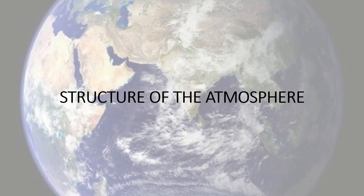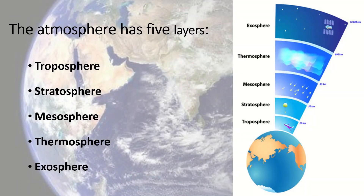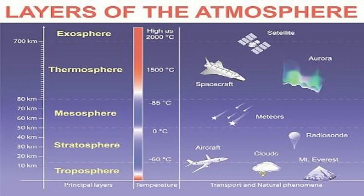Now let's move on to the structure of the atmosphere. The atmosphere has five layers. Starting from the surface of the earth, we begin with the troposphere, then the stratosphere, mesosphere, thermosphere, and the outermost layer, the exosphere. Here you have a chart showing the height in kilometers, the principal layers, the temperatures, and the transport and natural phenomena of each layer.